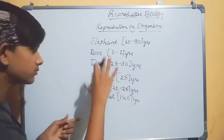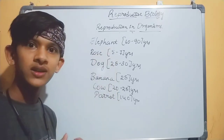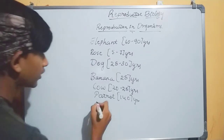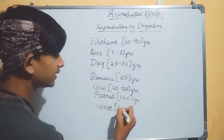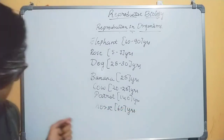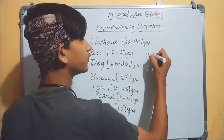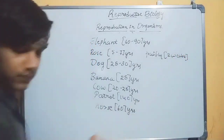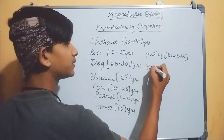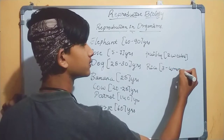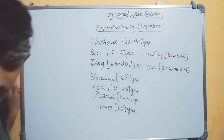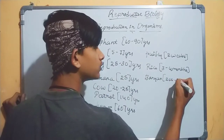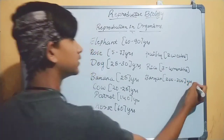Parrot lives 140 years. So size of body is not a determining feature of the number of years lived. Horse: 60 years. Fruit fly: just two weeks. Rice plant: three to four months lifespan. Banyan tree: 200 to 300 years.